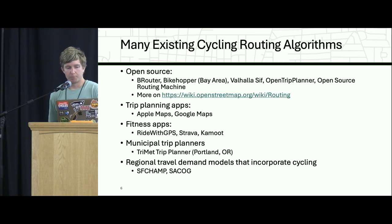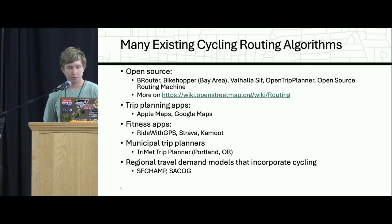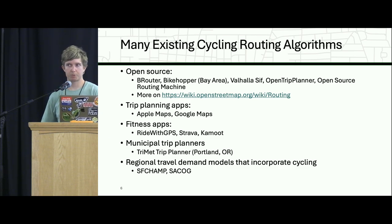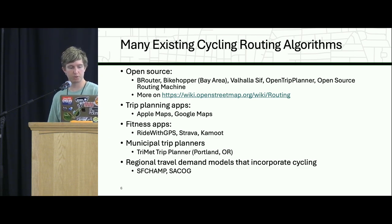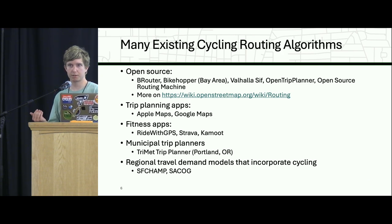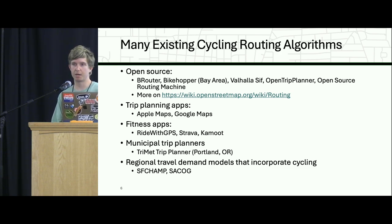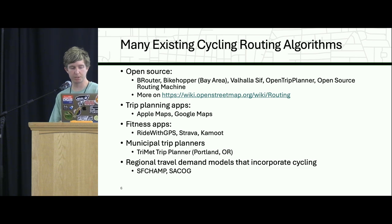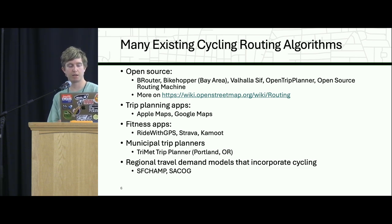There are a lot of existing cycling routing algorithms out there. I'm not going to list them all, but there are a lot of open source ones. There are trip planning apps with bike-specific components, fitness apps that use user data, a couple of instances of municipal trip planners with bike-specific routing, and occasionally regional travel demand models maintained by metropolitan planning organizations that have some considerations for cycling routing.